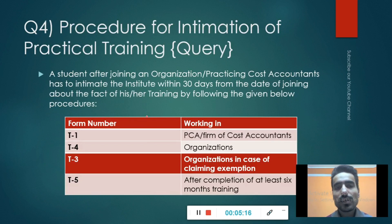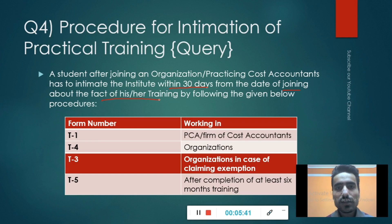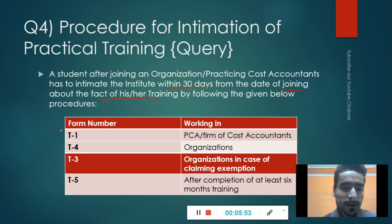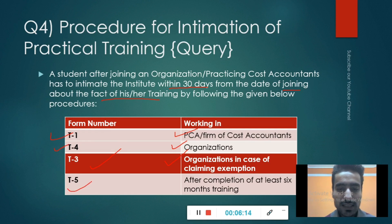The fourth question is: What is the procedure for intimation of practical training? A student after joining an organization or practicing cost accountant firm has to intimate the institute within 30 days from the date of joining. If you haven't done it within 30 days, you can still do it now. Form T1 is for if you have started working in a Cost Accountancy firm; Form T4 is for if you have started working in an organization. Form T3 is for organization exemption claim. Form T5 is submitted after completion of at least 6 months of training.